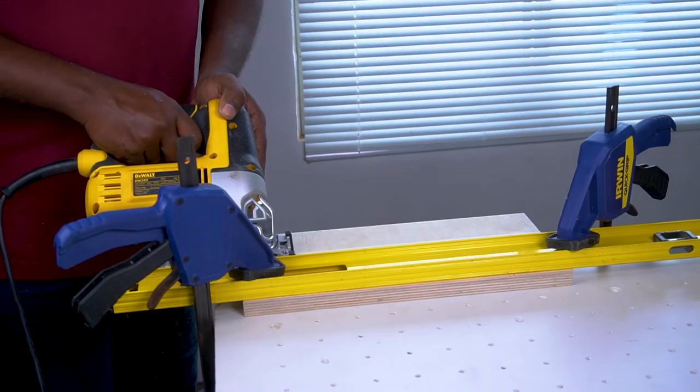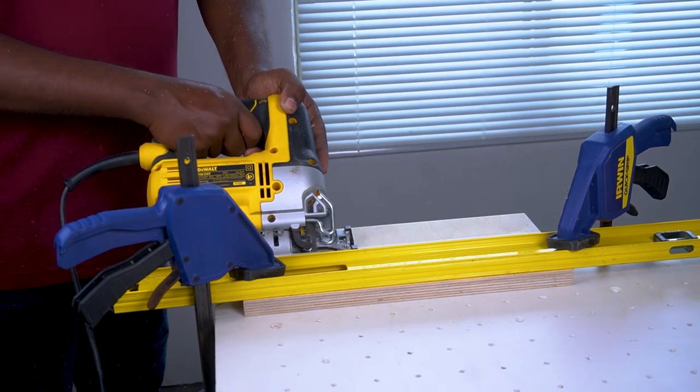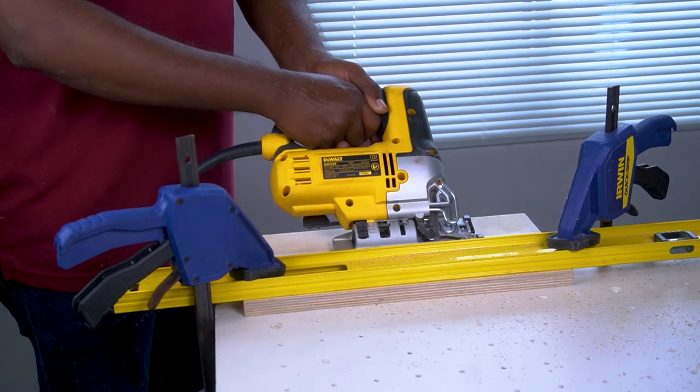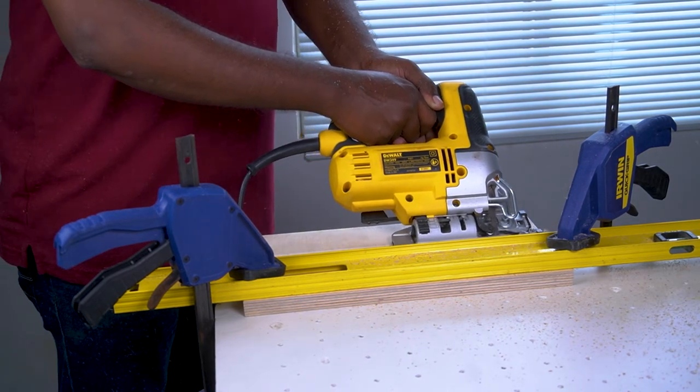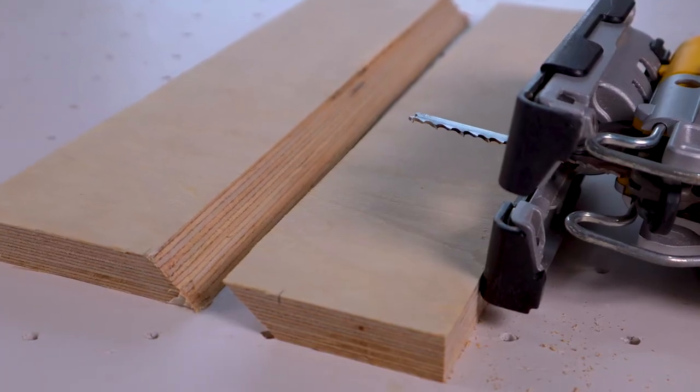Begin cutting with the jigsaw. Remember to be slow and careful as the blade can flex or even break if you force it through. Ensure you apply plenty of pressure towards the fence so the blade doesn't change course or veer off the cut line. Here's the French cleat completed with the jigsaw.